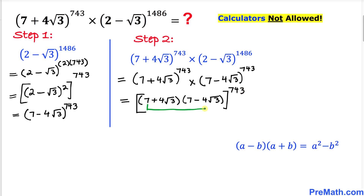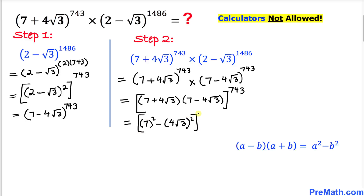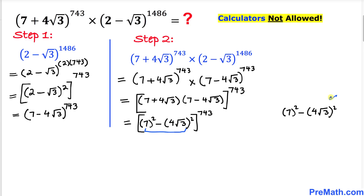This whole thing represents the product of a sum and a difference, so we apply the formula (a + b)(a - b) = a² - b². This gives us (7² - (4√3)²)^743. Simplifying: 49 minus 4² × 3, which is 49 minus 16 × 3, giving us 49 - 48 = 1.